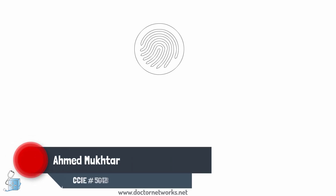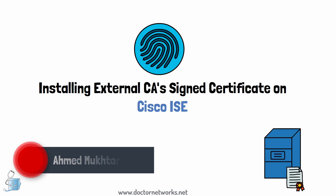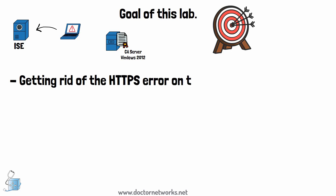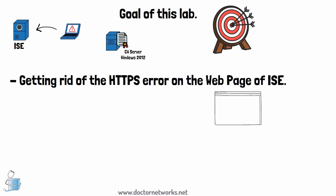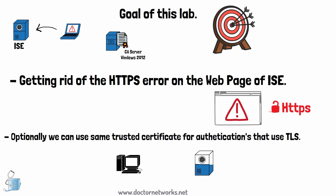Today we are going to look at installing an external certificate authority signed certificate on Cisco ISE. The goal of this lab is to see how we get rid of certificate errors while accessing or communicating with Cisco ISE, using an external certificate authority server — Windows Server 2012 — for certificate signing. The end result is no HTTPS errors when accessing ISE via the GUI, and we can use the same certificate for authentication purposes.